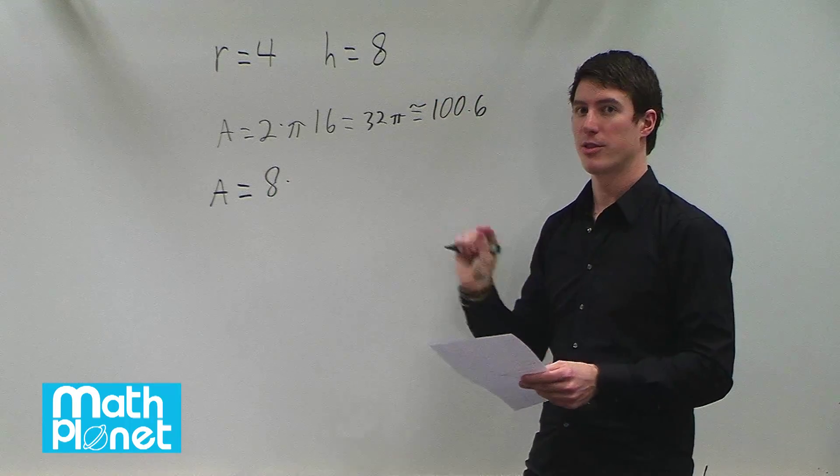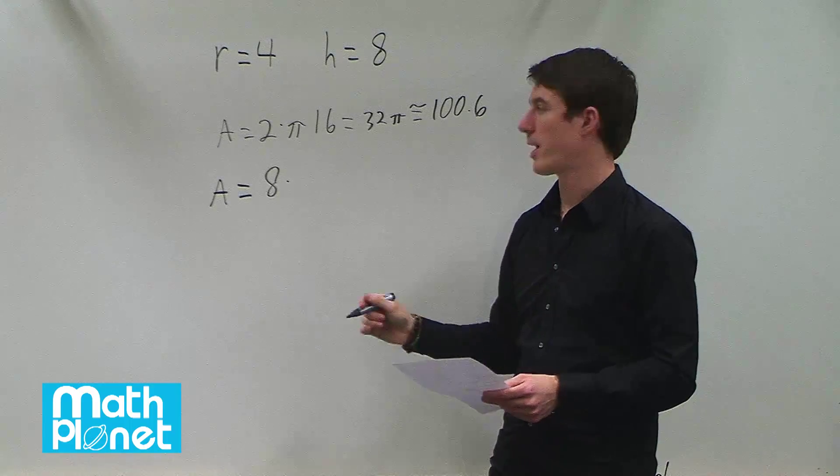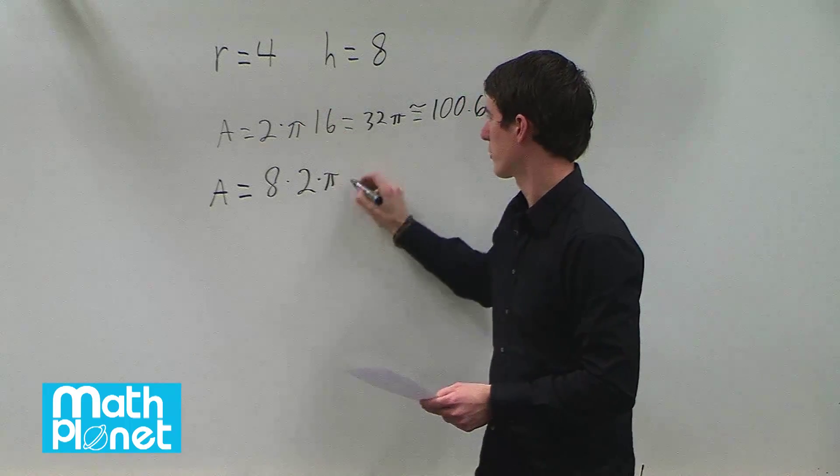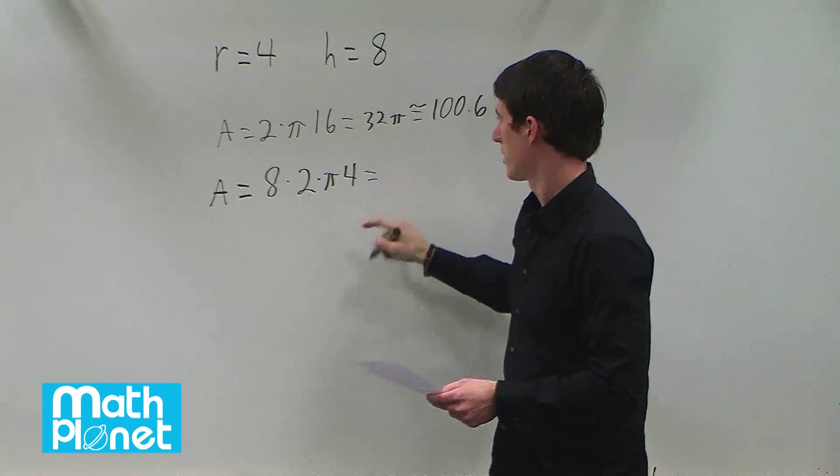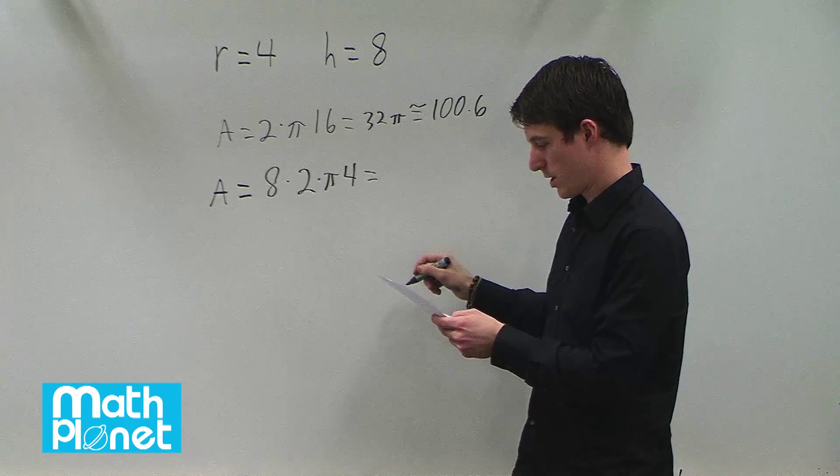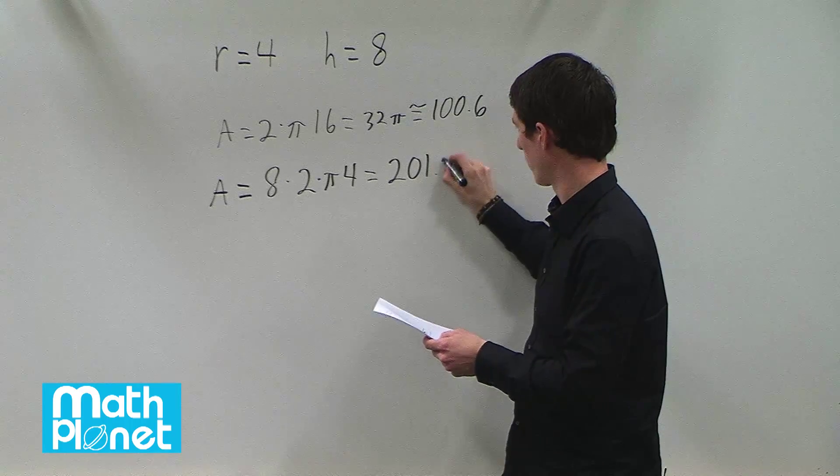The base is going to be the circumference of a circle. The circumference of a circle is 2 pi r. 2 times pi and r is 4. If you multiply all this out you get 16 times 4 times pi which comes out to be 201.1.